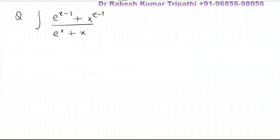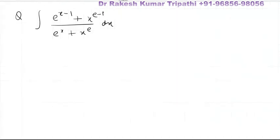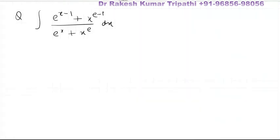In this integral, it does not look like the numerator is the derivative of the denominator, but on differentiating the denominator we find e^x plus derivative of x^e is e·x^(e-1), because e is a constant.